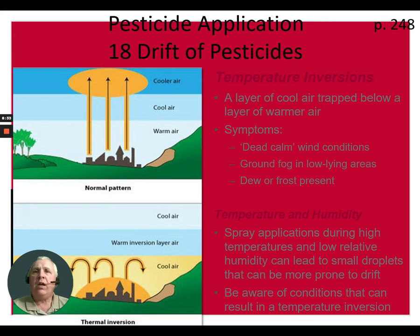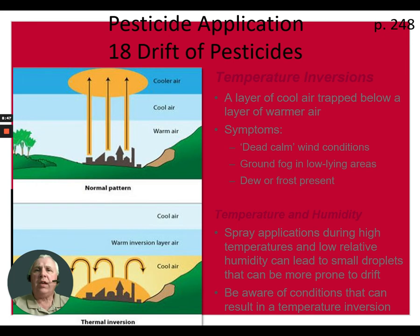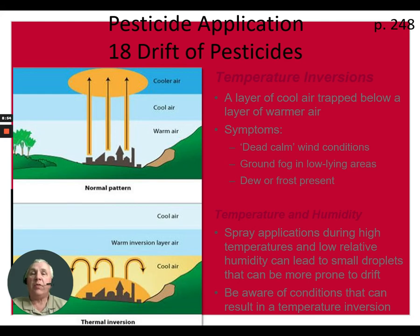Normally, warm air starts at the bottom and rises. As it gets higher it expands and cools, so the higher we go the cooler it gets. As a pilot, I know we generally see temperature lower by three degrees Celsius per thousand feet of altitude. That's the normal air layering you would expect.